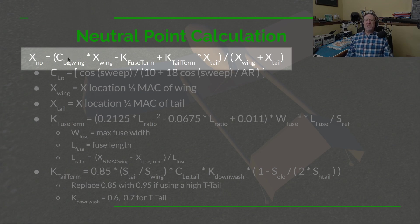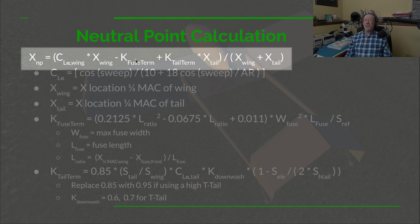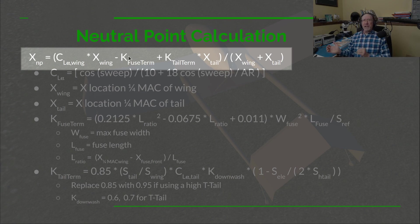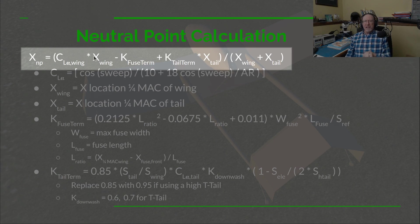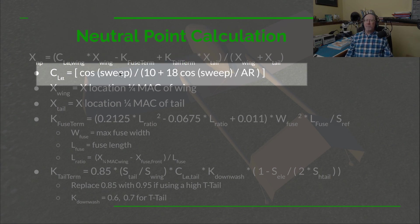Next we need C_L-alpha of the wing — that's the lift curve slope of the wing, not the airfoil — and the lift curve slope of the tail. We also subtract a fuselage term: the portion of the fuselage in front of the quarter-chord of the wing is destabilizing, so there's a negative sign there, which actually moves the neutral point forward. The quarter-chord of the wing is roughly the most forward position of the neutral point; the fuselage moves it slightly further forward while the tail moves it significantly rearward.